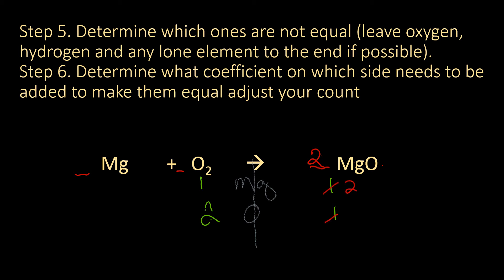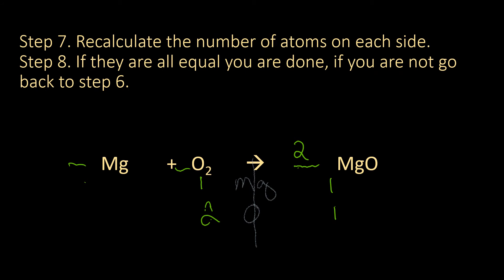So I need to determine what coefficient to be made and then adjust my count. So now my magnesium is not equal. So what do I need to multiply over here times to get to two? And again, one times two equals two, so this is going to be a two.